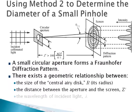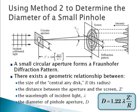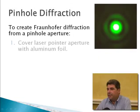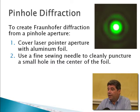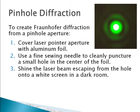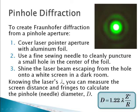Here are the parameters we'll use in the formula, which will enable us to find the diameter of the pinhole. To create this pinhole diffraction pattern in the lab, use a laser pointer and cover it with aluminum foil. Then, with a very fine sewing needle, puncture a clear small hole in the center of the aluminum foil. Shine the laser beam into the hole and allow the light to escape onto a white screen. We can use the measurements to calculate the diameter of the needle.